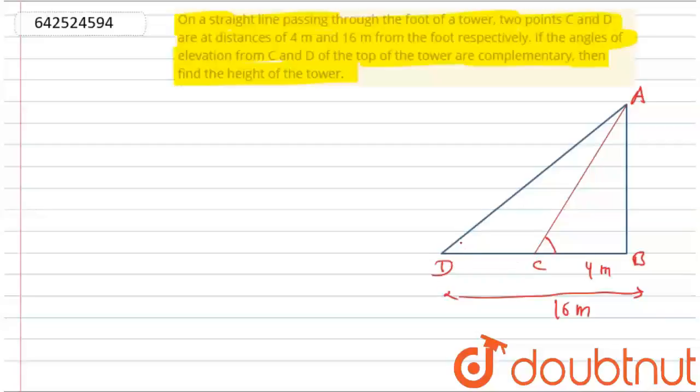These are the two distances from point B, that is C and D respectively. And these two angles, as per the question, are making complementary angles. So if D is alpha, then this will be 90 minus alpha. We have to find out the height of the tower, which is AB.